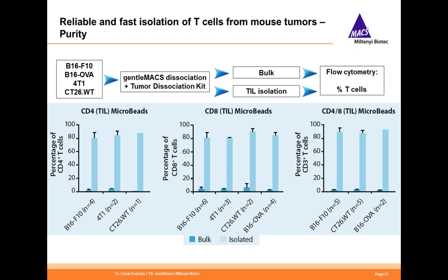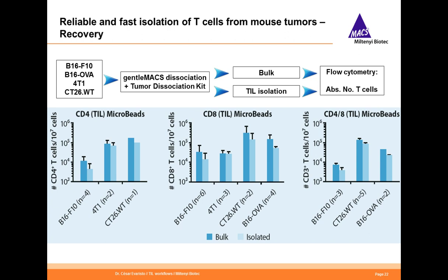We magnetically isolated T cells from multiple mouse tumor models — B16, 4T1, and CT26 — and compared the frequency of T cells in the bulk sample versus after TIL isolation. These graphs show the frequency of CD4 on the left, CD8 in the middle, and total T cells on the right, in cell suspensions from different tumors before isolation in dark bars, or after magnetic enrichment in light bars. We consistently achieved over 80% purities among live cells in all models tested. We also measured T cell recovery after TIL isolation, and T cell isolation typically resulted in cell yields between 50 and 90%.